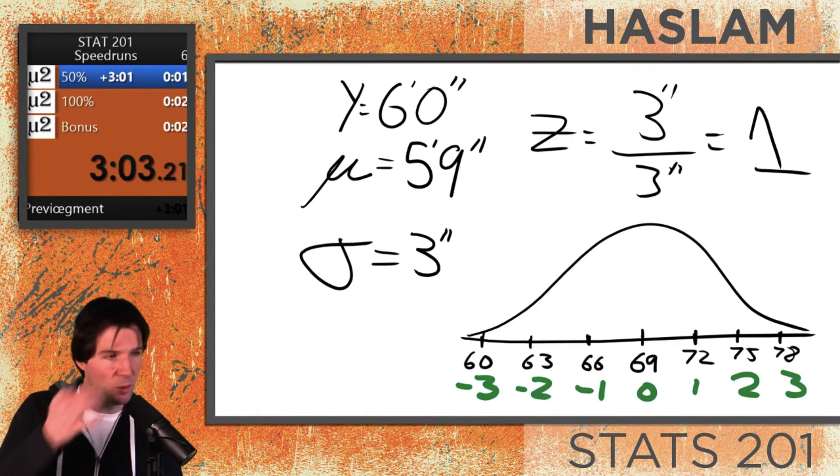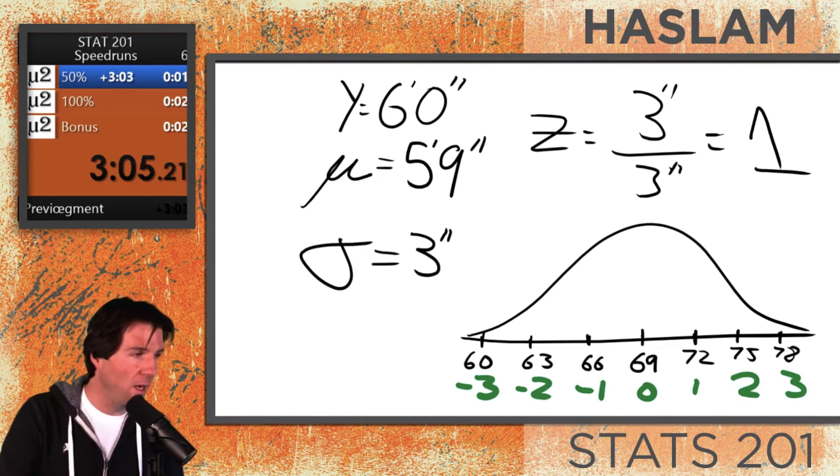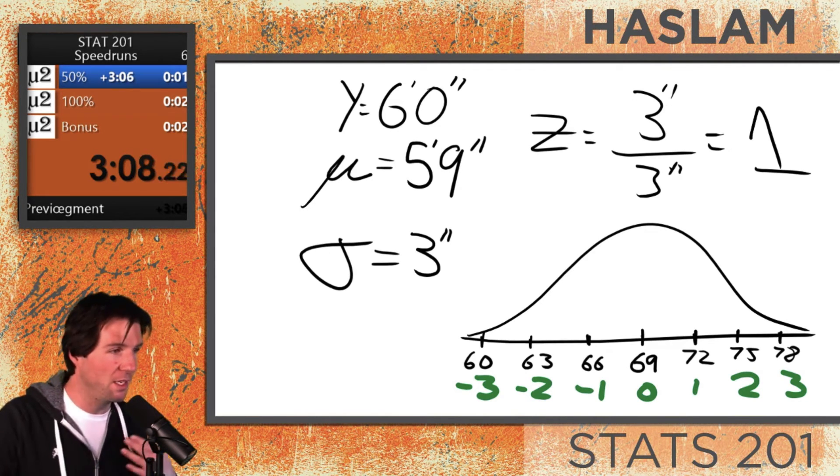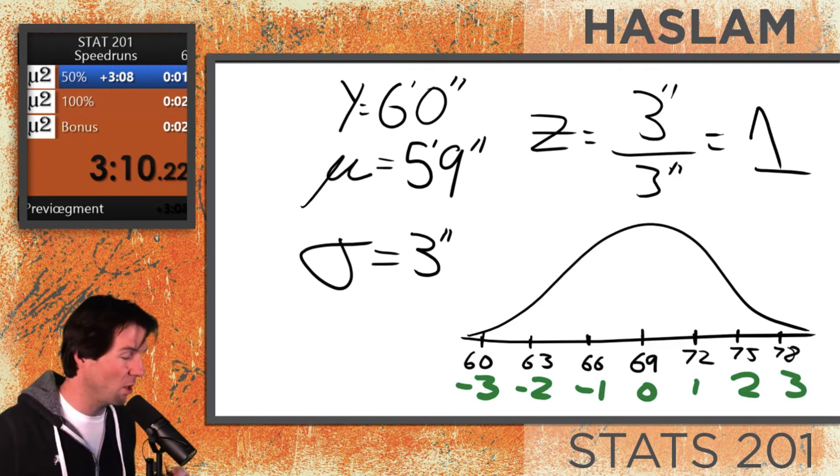You can see right here if you are five foot nine, you would have a z-score of zero. If you are five foot three, you would have a z-score of negative two. And we can see how this all relates.